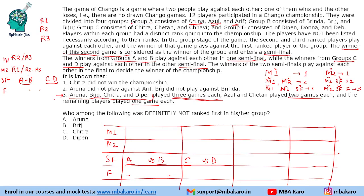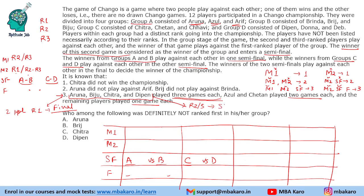So, out of the 4 players with 3 games (Aruna, Biju, Chitra, Deepin), 2 are rank 1 players going to the final, and 2 are rank 2 or 3 players who lost in the semi-final. Two players also played 2 games each: Azul and Chetan. The remaining players played 1 game each.